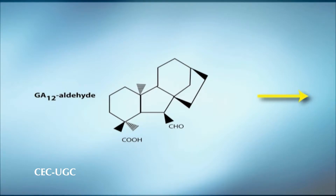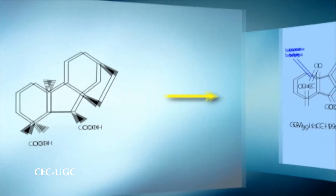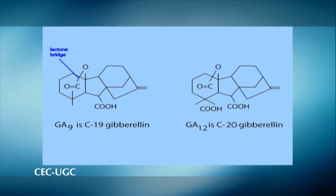Corinoic acid is converted to the aldehyde form of GA12 by decarboxylation. GA12 is the first true gibberellin ring system with 20 carbon atoms. From the aldehyde form of GA12 arise both 20-carbon and 19-carbon gibberellins, though there are many mechanisms by which these other compounds arise.